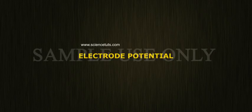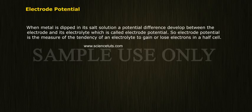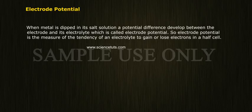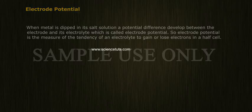Electrode Potential: When a metal is dipped in its salt solution, a potential difference develops between the electrode and its electrolyte, which is called electrode potential. Electrode potential is the measure of the tendency of an electrode to gain or lose electrons in a half cell.